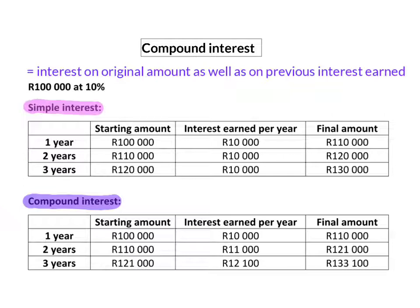With simple interest you can see that the interest received each year stays the same because it is determined by looking at the original starting amount. If we look at compound interest, the interest received each year increases because it is determined by the new starting amount for that year.